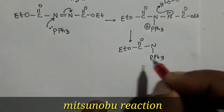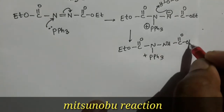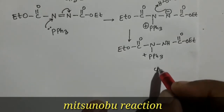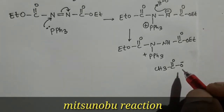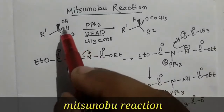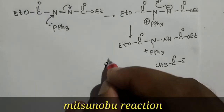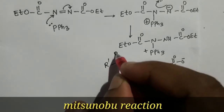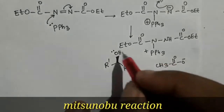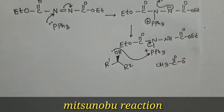Here, triphenylphosphine is bonded, with an N-H bond and C=O group. Acetate will form. There is a lone pair present. Then this substrate — the alcohol — acts as a nucleophile. The oxygen electron pair of the alcohol will attack the phosphorus atom and convert the oxygen into a good leaving group.